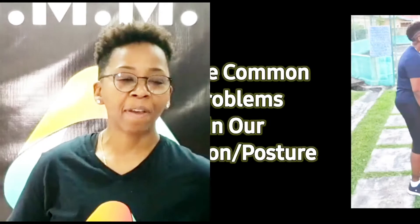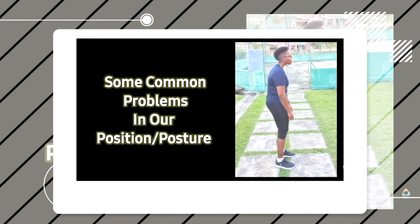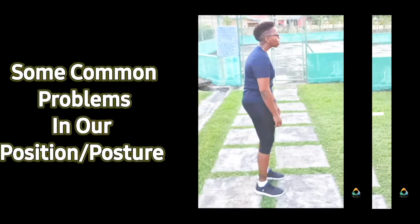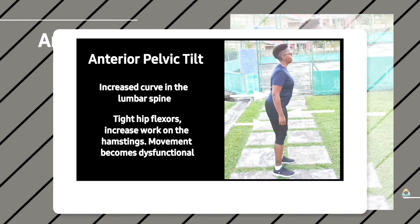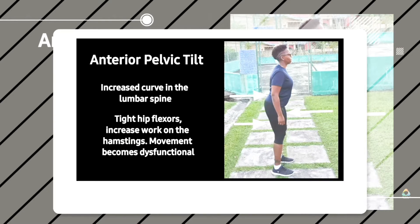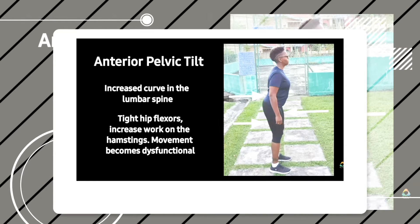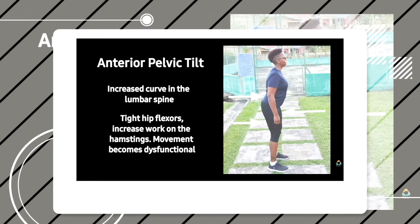Hey guys, if you have anterior pelvic tilt, here are three exercises you can do to fix that problem. I did a video explaining the different postures you can see from the lateral view, and one of the things I spoke about was the anterior pelvic tilt. This is definitely a postural dysfunction where the pelvis tilts forward from the front, causing that overarching to the back.